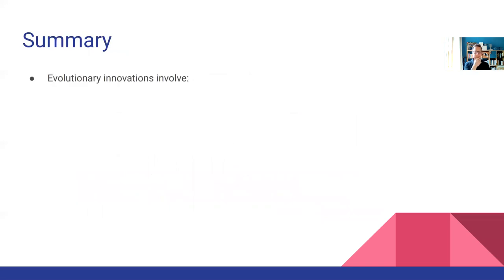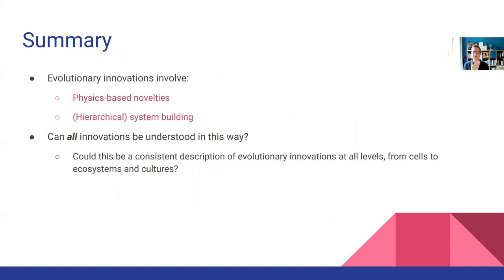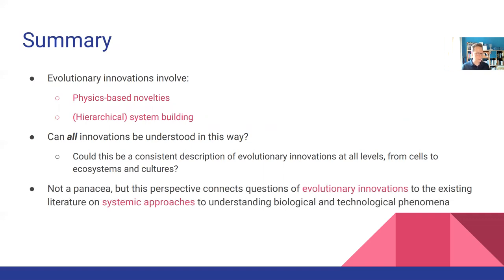To summarize: my claim here is that evolutionary innovations involve physics-based novelties and hierarchical system building. The question is whether all innovations can be understood in this way — could this be a consistent description of evolutionary innovations at all levels, from cells to ecosystems and cultures? I'm certainly not claiming this is a panacea, but this perspective connects questions of evolutionary innovations to the existing literature on systemic approaches to understanding biological and technological phenomena.